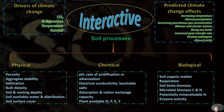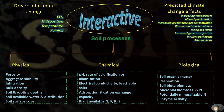The drivers of climate change include the concentration of carbon dioxide and other greenhouse gases, nitrogen deposition, temperature, and rainfall. The predicted effects of climate change from these drivers include increasing temperatures, altered precipitation patterns, increasing greenhouse gas concentration, warmer and shorter winters, rising sea levels, increased gene transfer rates, virulent pathogens, and altered crop yields.